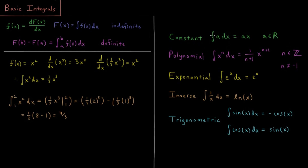For a constant: the integral of a constant a, where a is some real number, is equal to a times x. For polynomials — the inverse of the polynomial rule for derivatives — the integral of x to the n is 1 over n plus 1 times x to the n plus 1, where n is some integer and n is not equal to negative 1.